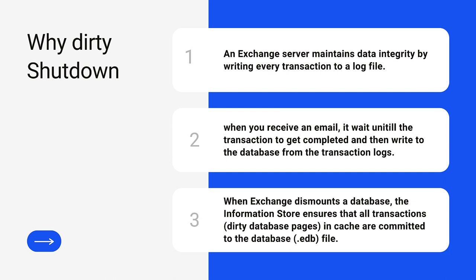EDB files are the database files which are saved in the database location of your exchange mailbox servers. In addition to the database EDB file, you will see the transaction logs. A transaction log is a file that contains a record of the changes that were made to an exchange database, and transactional logs play a very important role in an exchange server. An exchange server maintains data integrity by writing every transaction to a log file. So when you receive an email, instead of writing the data entirely to the database, it waits until the transaction is completed and then writes to the database from the transaction logs. In case of any hardware failure or something happened in between, the transaction remains incomplete and it won't commit the transaction to the database.